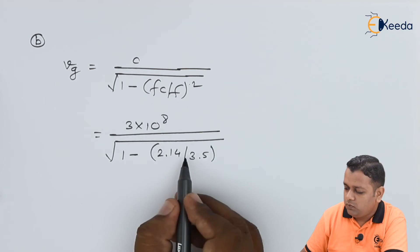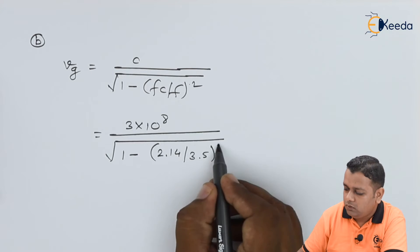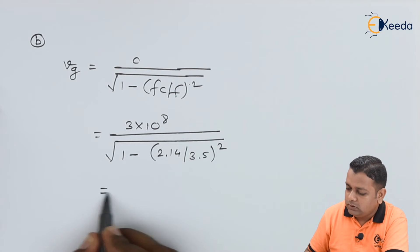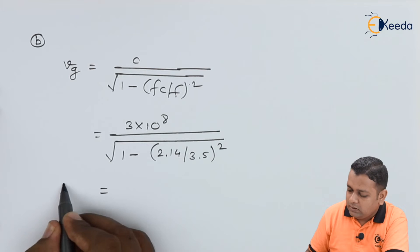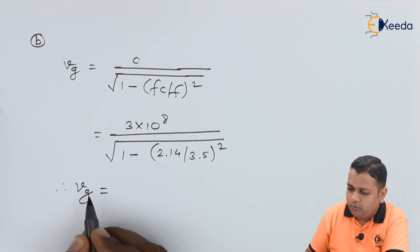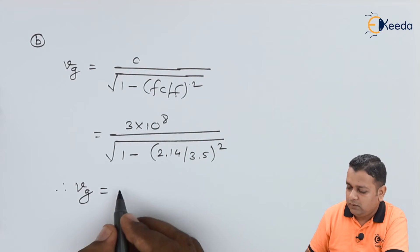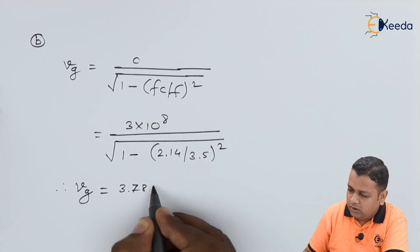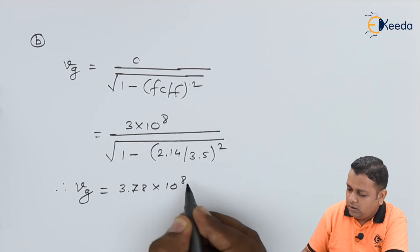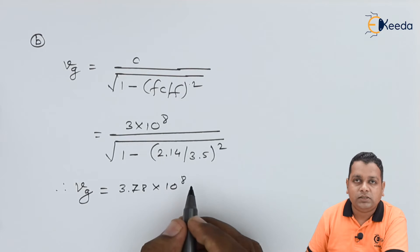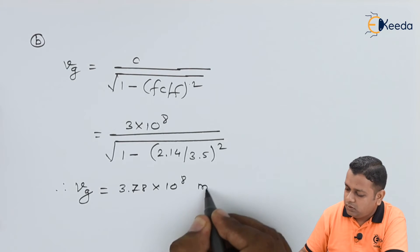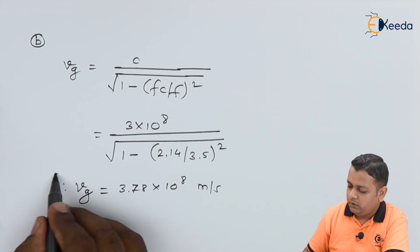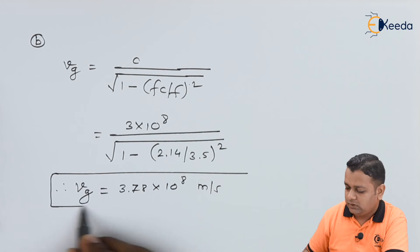Substituting 2.14 divided by 3.5, squared, into the formula, this computation gives the phase velocity vg = 3.78 × 10⁸ m/s in the SI system of measurement.